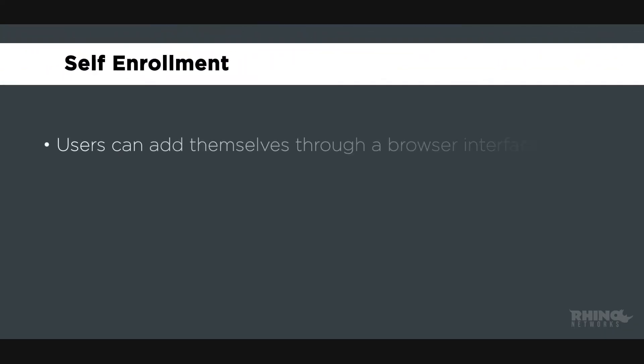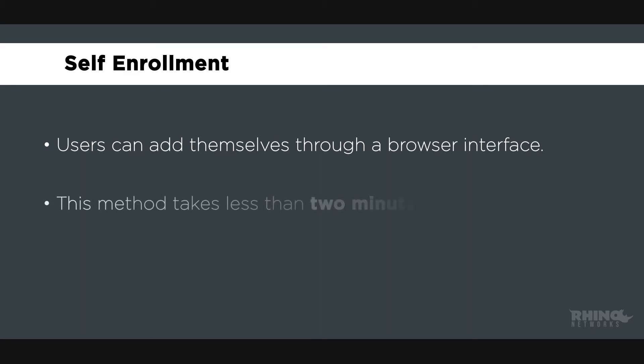The next method of enrollment is self-enrollment. Using this method, users add themselves to Duo through a browser interface and step through the installation and configuration of Duo Mobile. This method takes less than two minutes for most users.